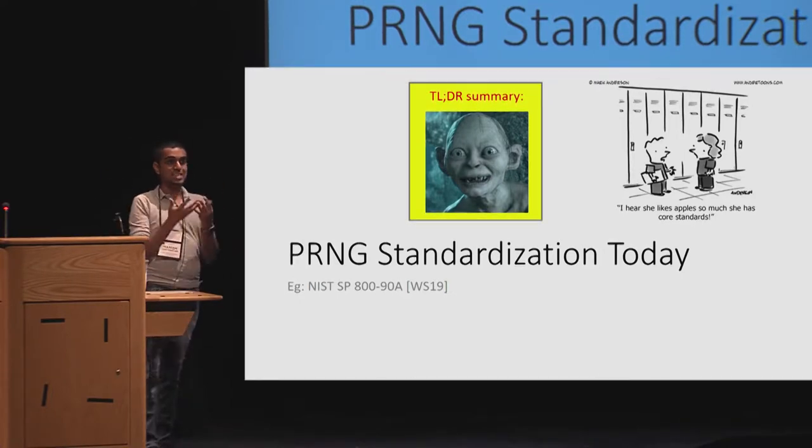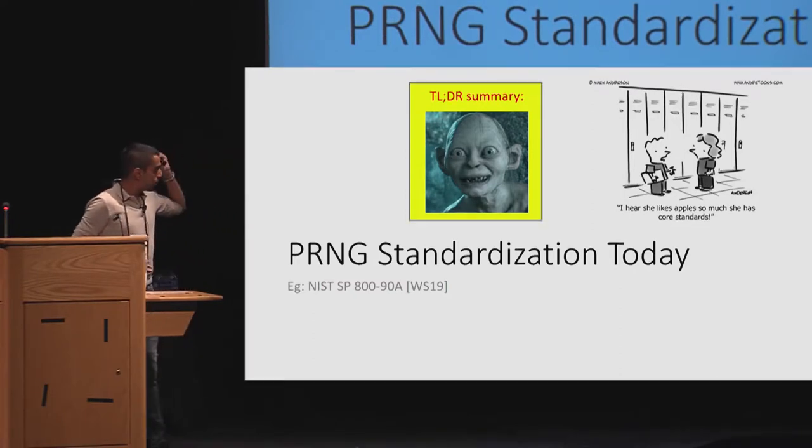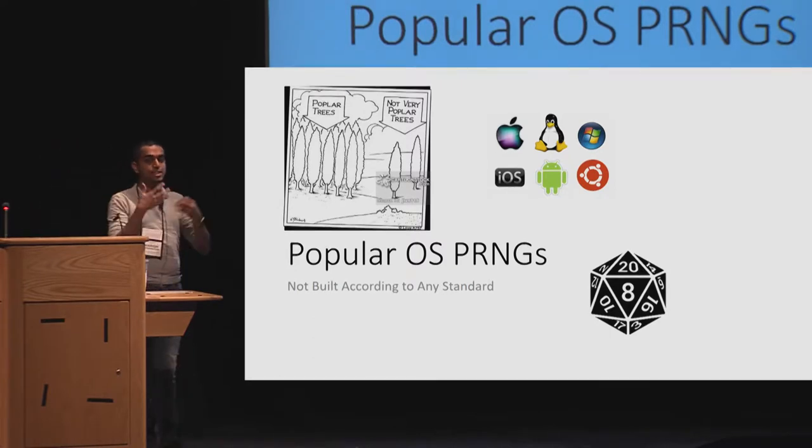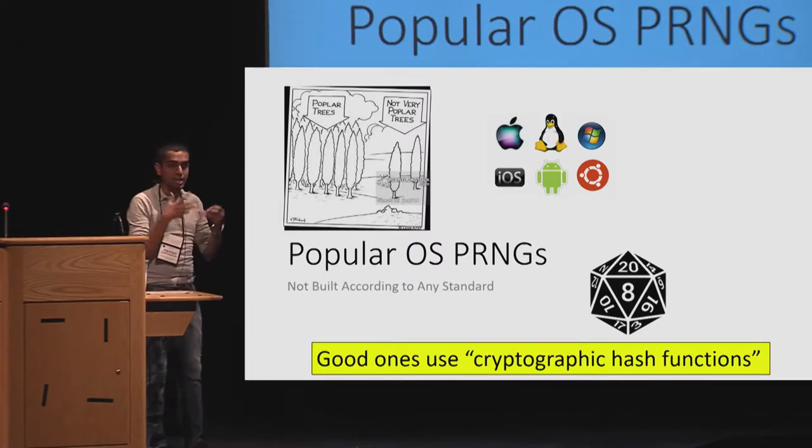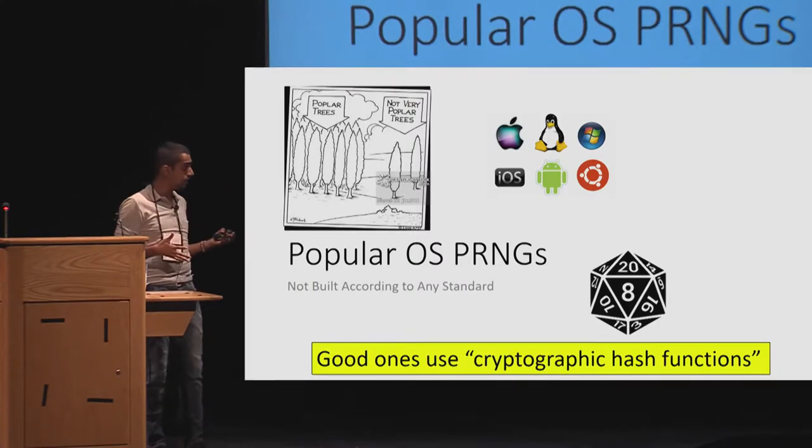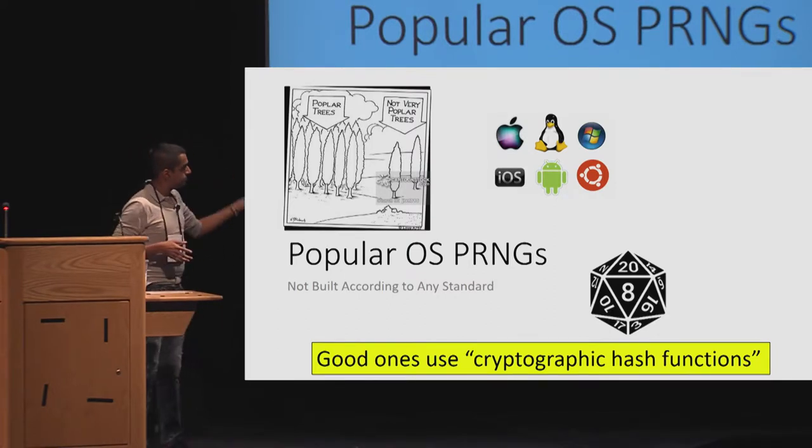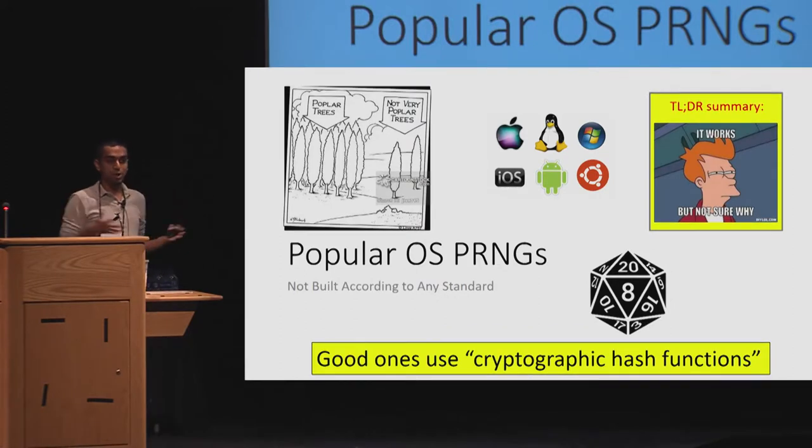Clearly operating systems have PRNGs. We know them, we use them. So what about those in particular? The fact remains that these PRNGs was not built according to any standard, but the good ones seem to use cryptographic hash functions. We'll be revisiting this idea in greater detail. The TLDR summary is that it works, but we are not entirely sure why.